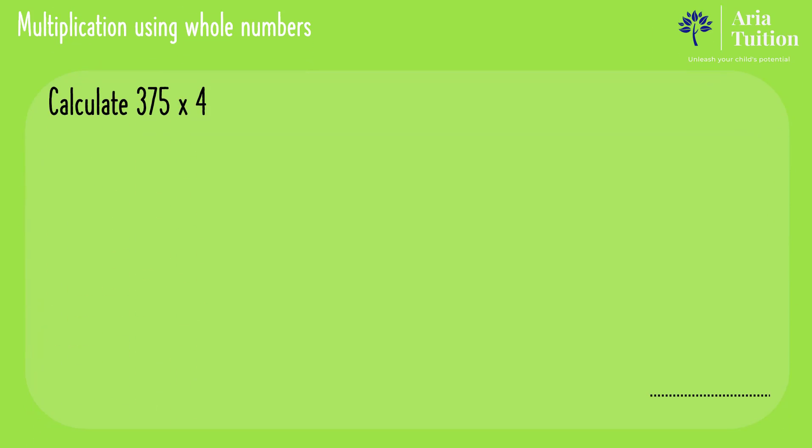To multiply larger values together, we use a method called column multiplication. Here's an example. Calculate 375 multiplied by 4.